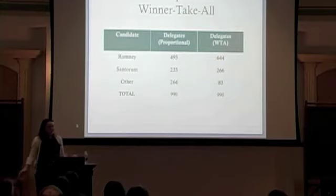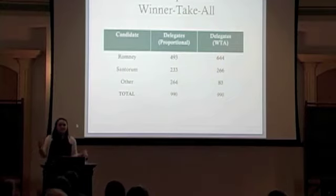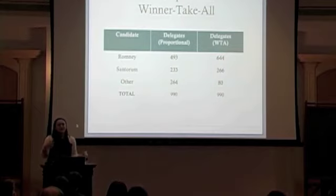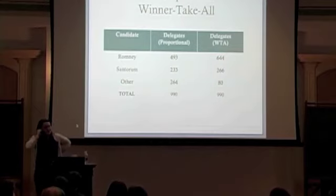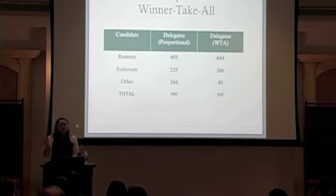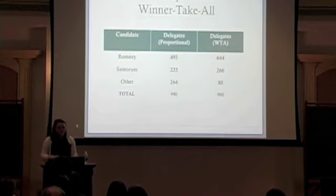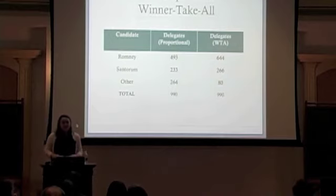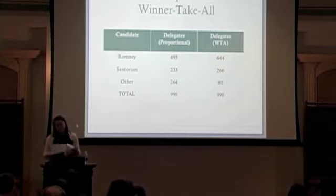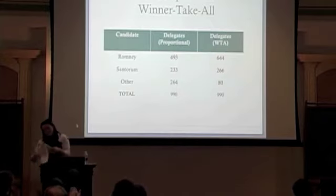My point in all this is that there are structural and unavoidable deficiencies with the way that we hold our elections. But on top of these deficiencies, the particular ways in which we conduct our primaries have a colossal effect on the election outcome. As a future voter, we should probably be aware of this when we go to the polls. Thank you.